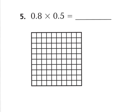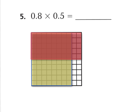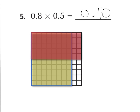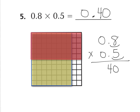Go ahead and shade in 8 tenths vertically and 5 tenths horizontally. Whatever is overlapped, count up those hundredths pieces and write that as your product. Press pause now. I shaded 8 tenths vertically yellow and 5 tenths vertically pink — you can see a darker color where they overlap. Counting by 5 hundredths: 5, 10, 15, 20, 25, 30, 35, 40 hundredths. You should have got 40 hundredths. The traditional method confirms: 8 times 5 is 40, with 2 decimal spaces giving 40 hundredths.